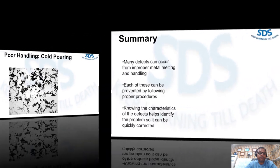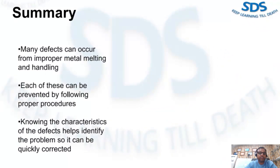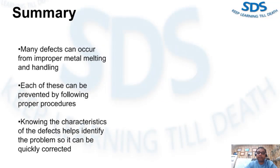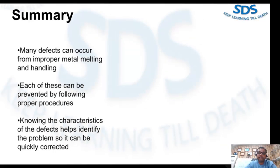In summary: many defects can occur from improper metal melting and handling. Each of these can be prevented by following proper procedures. Knowing the characteristics of the defect helps identify the problem so it can be quickly corrected.